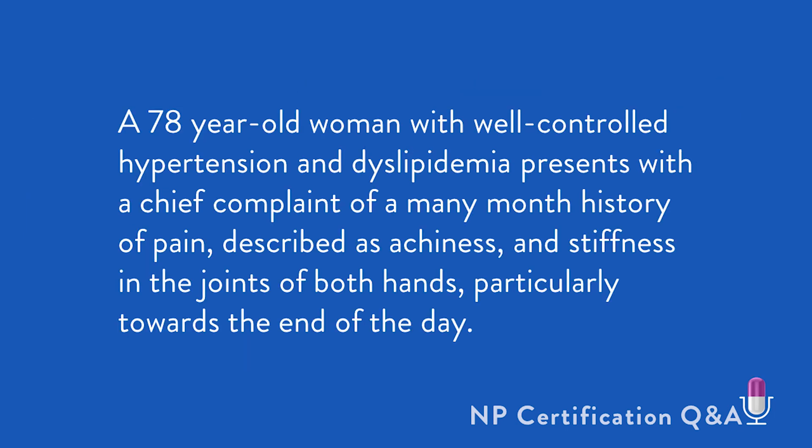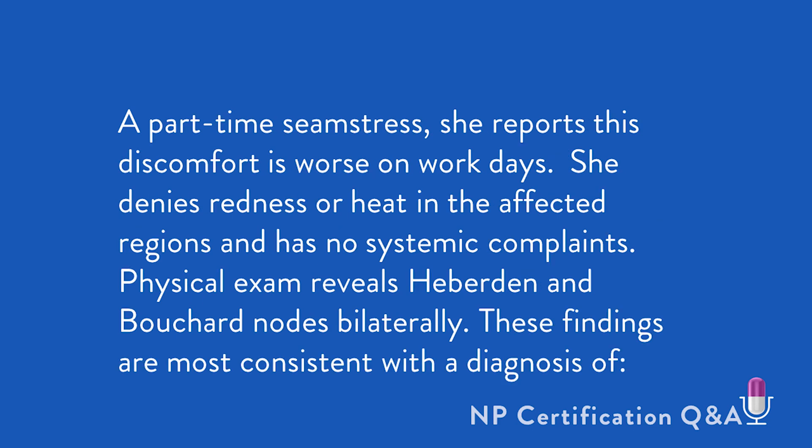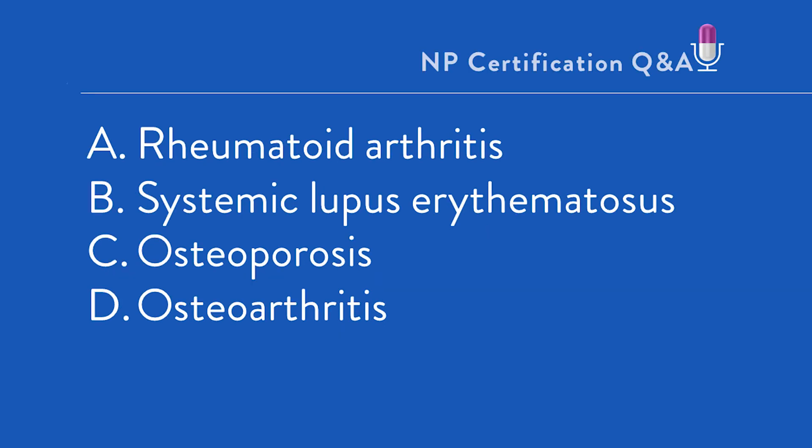A 78-year-old woman with well-controlled hypertension and dyslipidemia presents with the chief complaint of a many-month history of pain described as achiness and stiffness in the joints of both hands, particularly towards the end of the day. A part-time seamstress, she reports this discomfort is worse on work days. She denies redness or heat in the affected regions and has no systemic complaints. Physical exam reveals Heberden and Bouchard's nodes bilaterally. These findings are most consistent with the diagnosis of: A. Rheumatoid arthritis, B. Systemic lupus, C. Osteoporosis, D. Osteoarthritis.